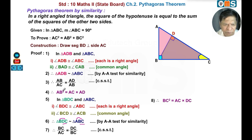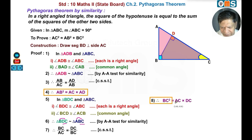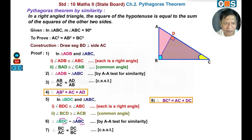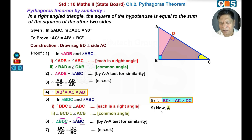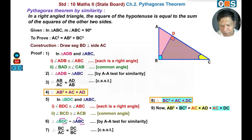Adding equation 3 and equation 4: AB square plus BC square is equal to AC into AD plus AC into DC.